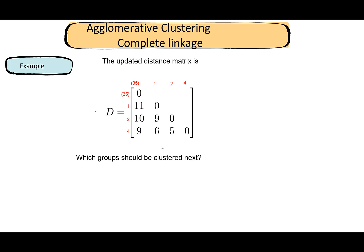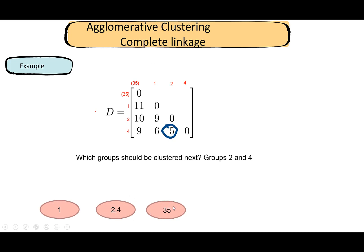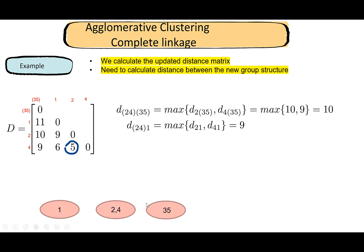The smallest element in the distance matrix is 5, so we merge groups two and four. The new group structure is: {three, five}, {two, four}, and {one}. We now calculate distances between all these groups to get an updated matrix. For the distance between {two, four} and {three, five}: d({three,five}, two) is 10 and d({three,five}, four) is 9; the maximum of 10 and 9 is 10.